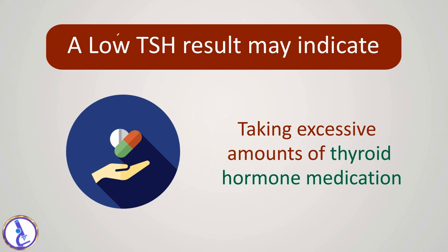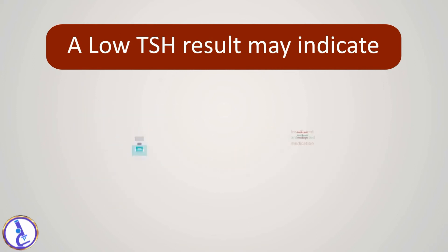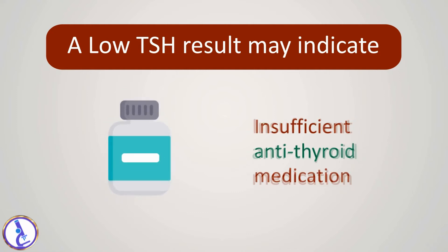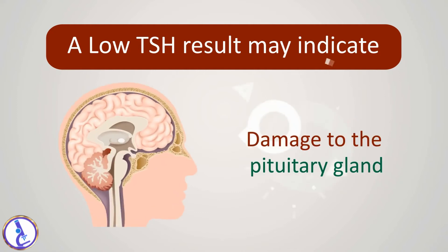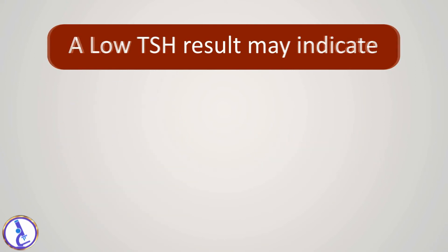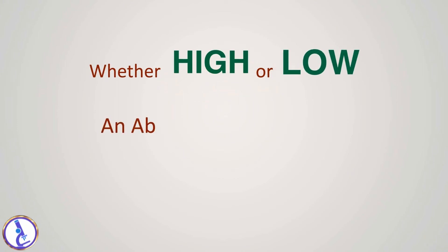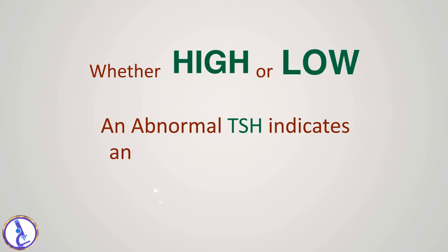A low TSH result may indicate an overactive thyroid gland — hyperthyroidism — or taking excessive amounts of thyroid hormone medication, or insufficient antithyroid medication in a person being treated for hyperthyroidism, or damage to the pituitary gland that prevents it from producing adequate amounts of TSH.